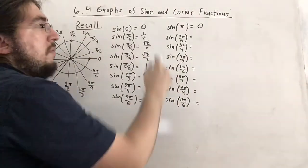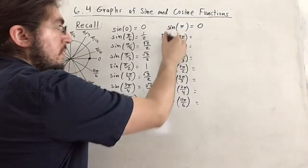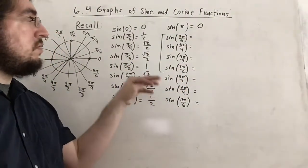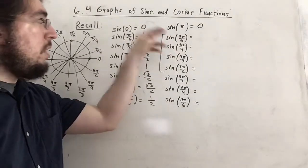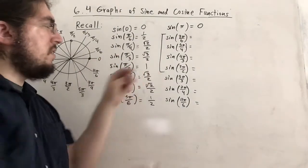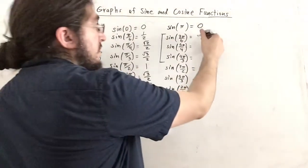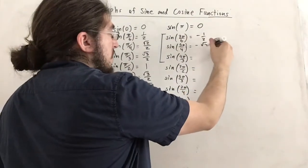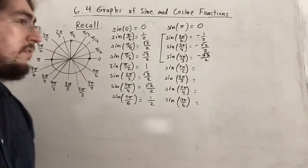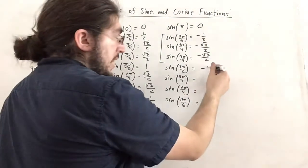For angles in the third quadrant — like 7π/6, 5π/4, and 4π/3 — sine is negative. Covering the numerators gives us the same reference angles as before, but negative: negative 1/2, negative radical 2 over 2, and negative radical 3 over 2. And sine of 3π/2 has a y-value of negative one, so that's negative one naturally.